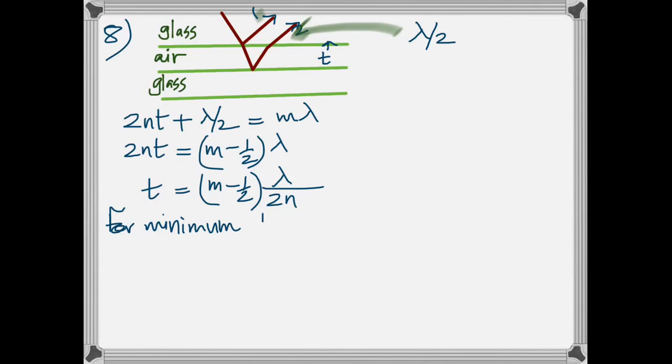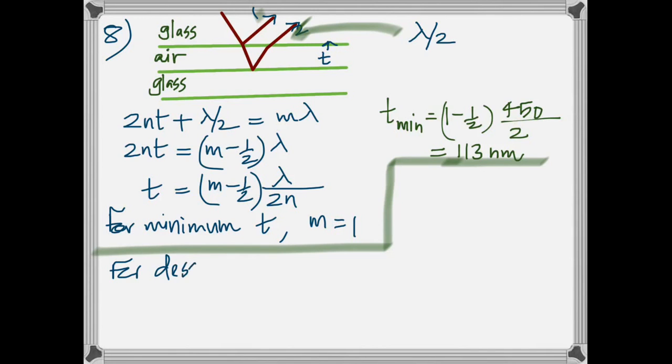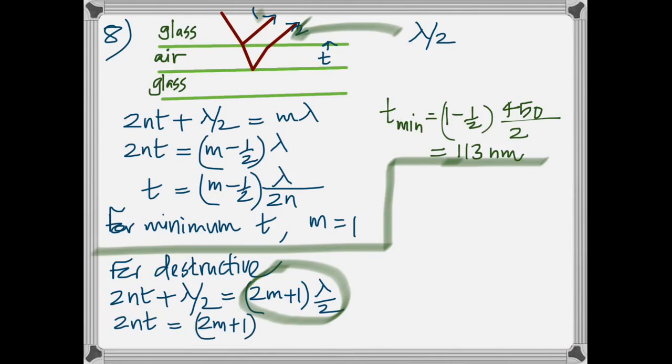See, each case is different. Remember that in this particular case it's the second ray that has a jump of lambda by 2, and it already has an additional path of 2nt. So when you take the total path difference it is 2nt plus lambda by 2. In all other cases it was the first one that had an additional path of lambda by 2. In that case you take 2nt minus lambda by 2. In the third case, if both of them have an additional path of lambda by 2, then it cancels out and you only take the path difference as 2nt. I hope that's very clear.